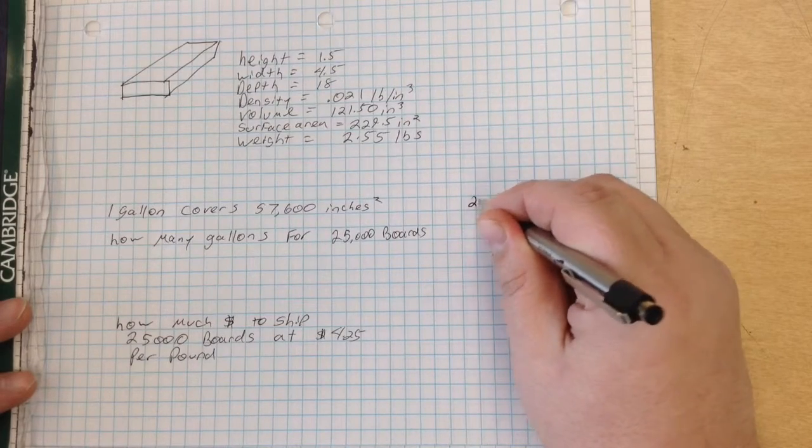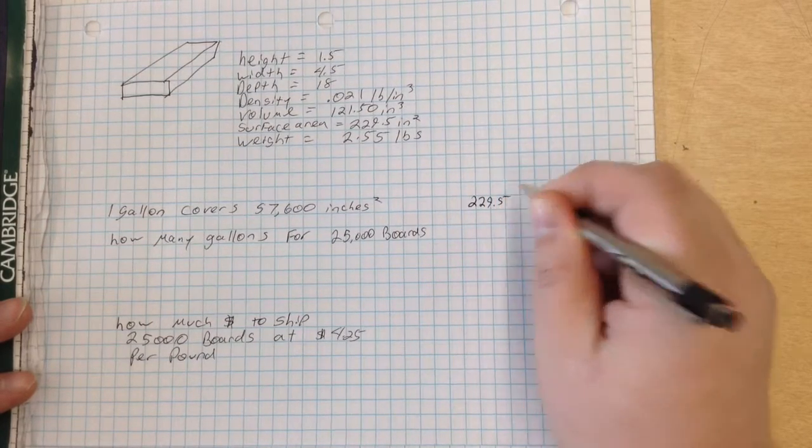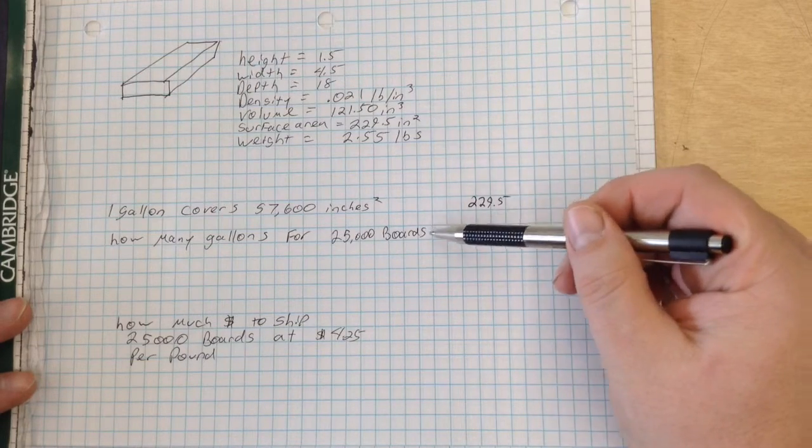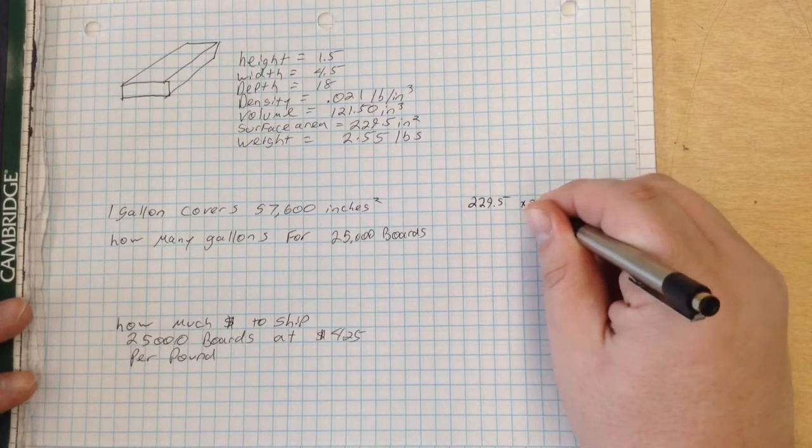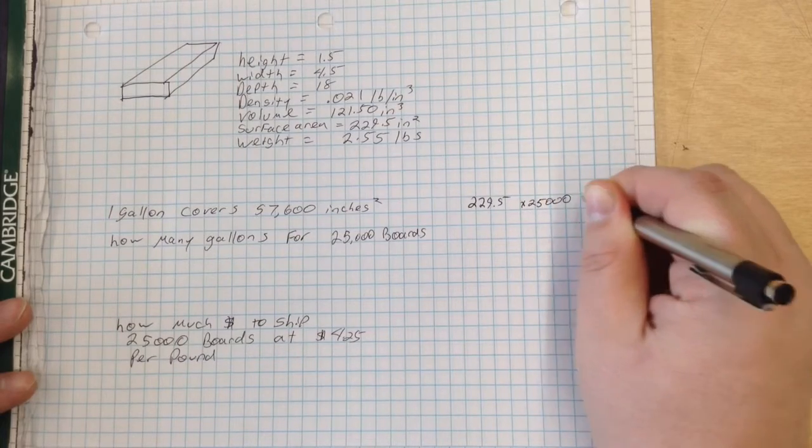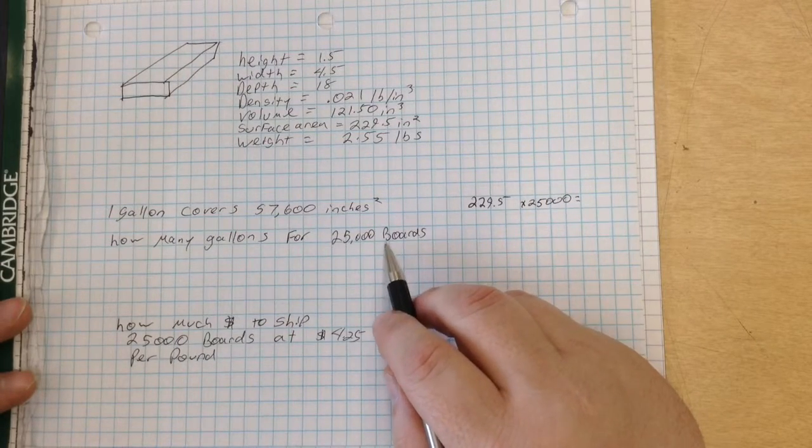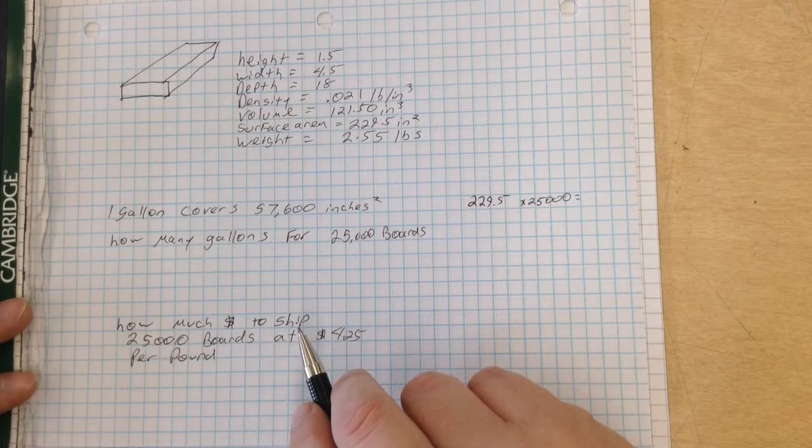we're going to multiply 229.5, which is the surface area of our board, times 25,000, because we first have to figure out how many square inches will be in the surface area of 25,000 boards.